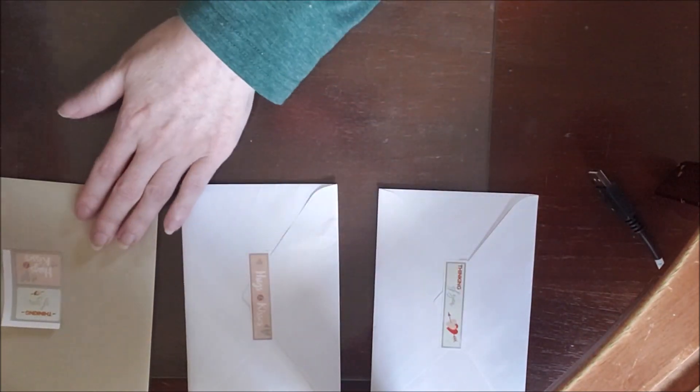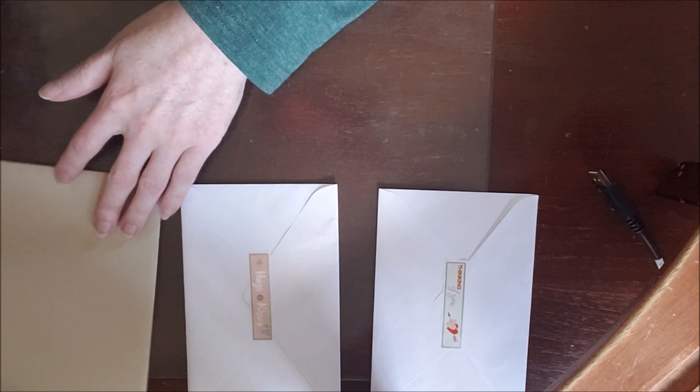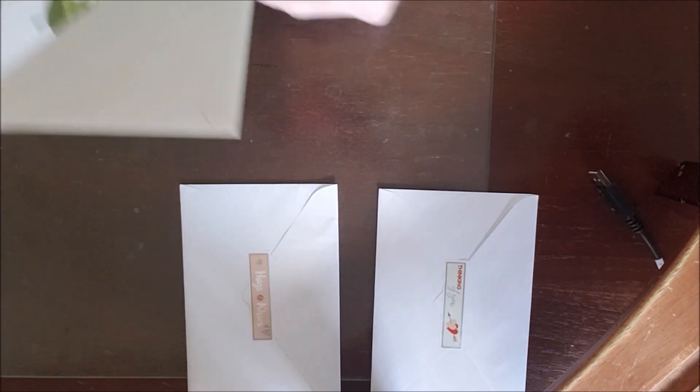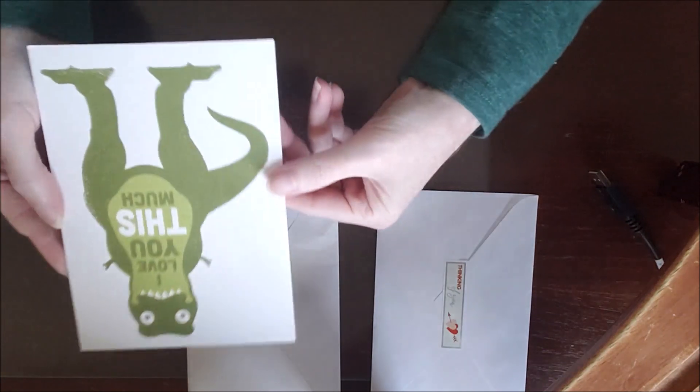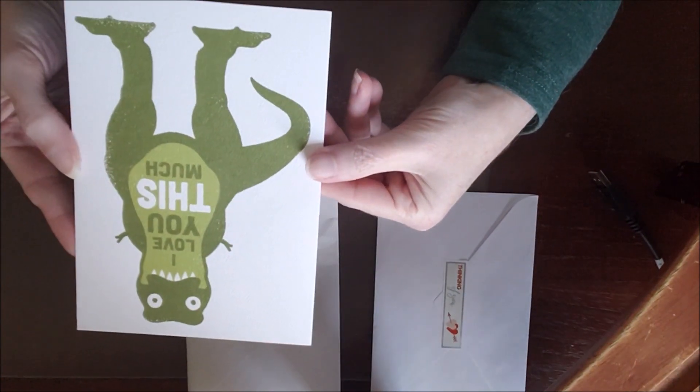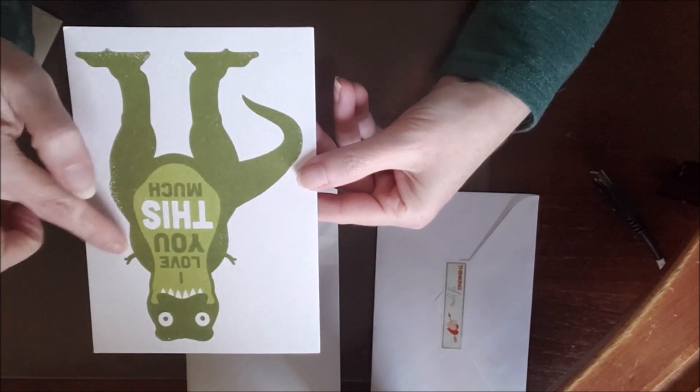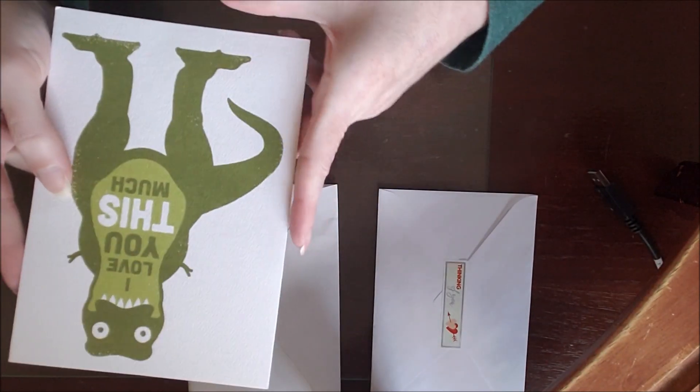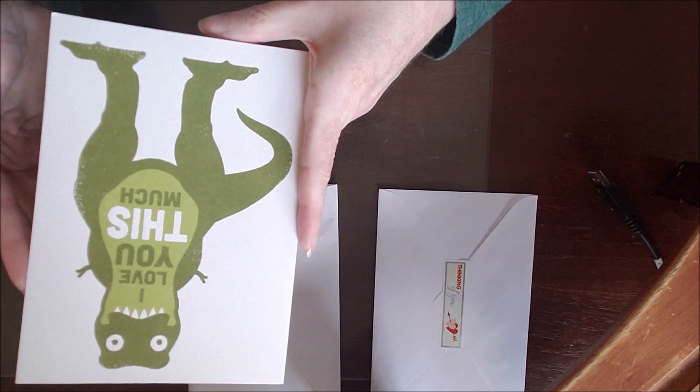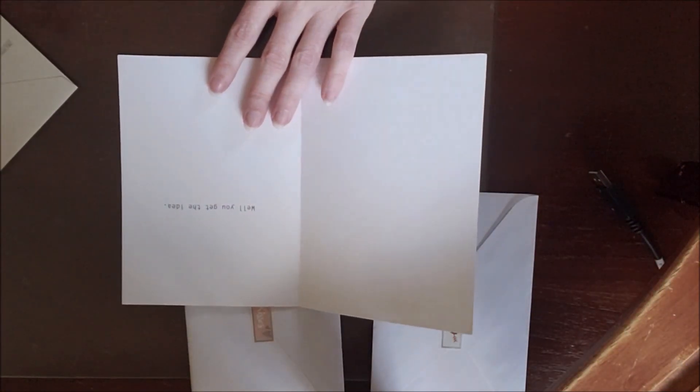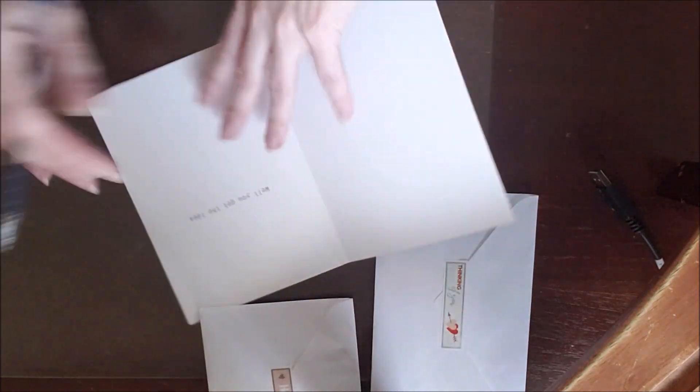There we go, okay, so one for each child. This is the other card, I love you this much and it is a T-rex with little T-rex arms. Somebody tells me that I have T-rex arms so this is for them.